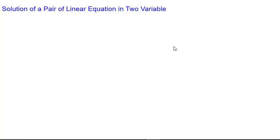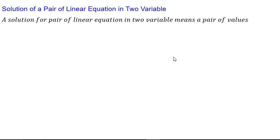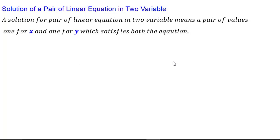Let us first understand what we mean by solution of a pair of linear equations in two variables. A solution for a pair of linear equations in two variables means a pair of values, one for x and one for y, which satisfies both the equations. The value of x and y should satisfy both equations, then I will call that pair the solution.